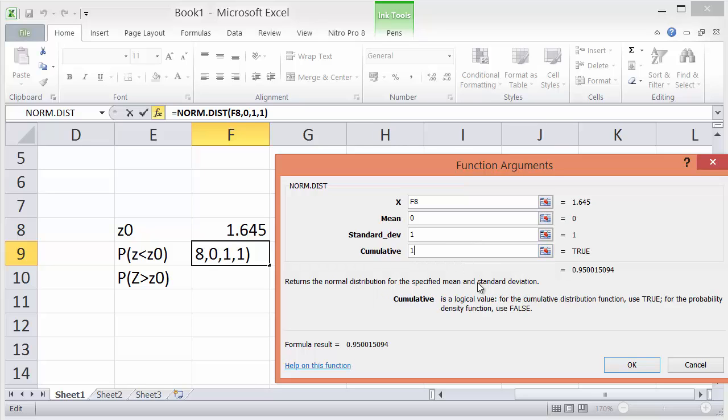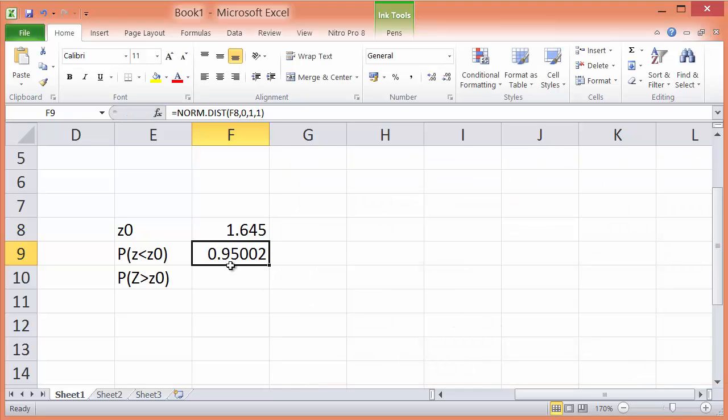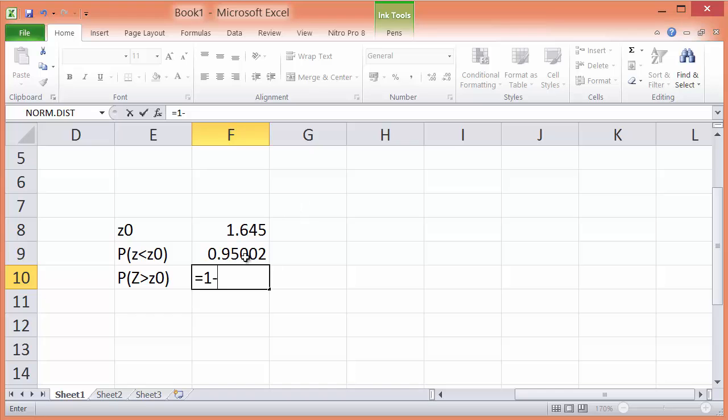And if you want a cumulative probability, you type in 1 or true in the last input. Click OK. And what you get is that indeed the probability that Z is smaller than 1.645 is 95% approximately.